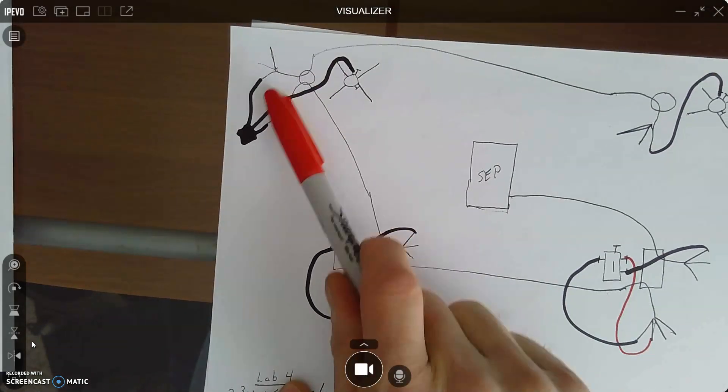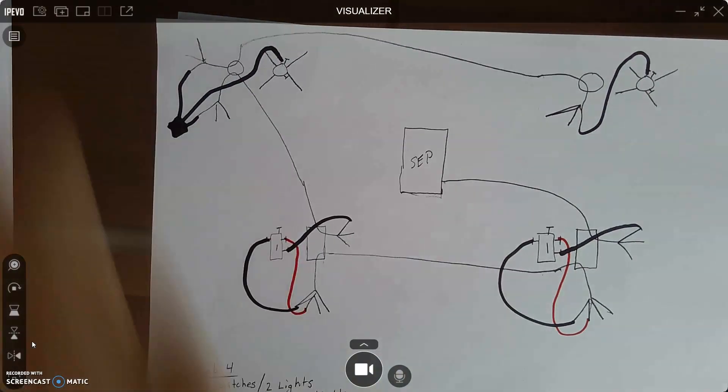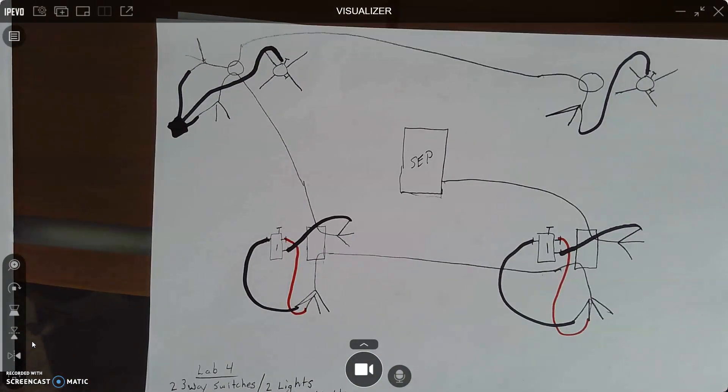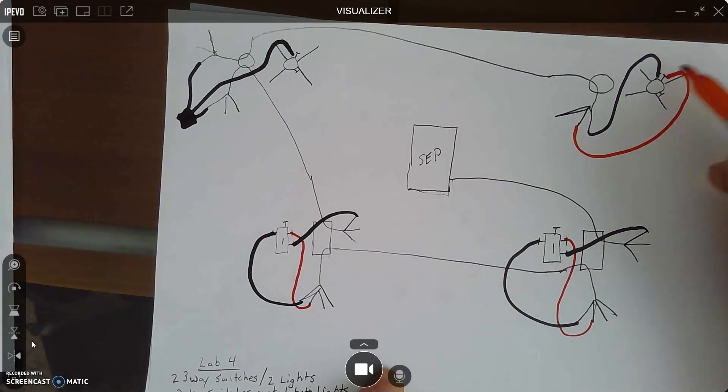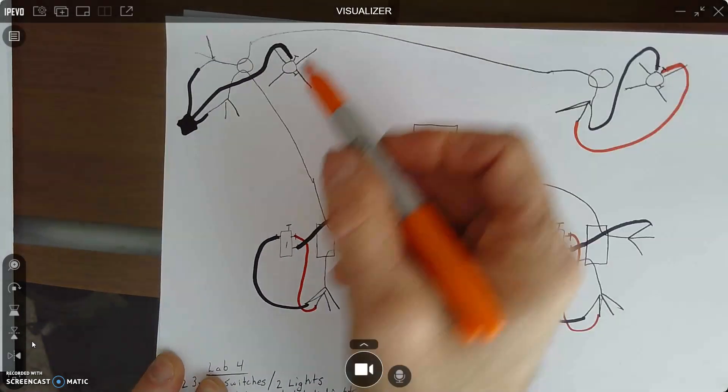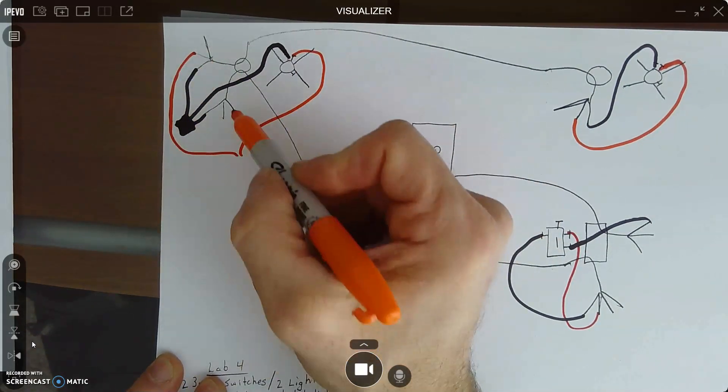Then I went up here and just connected my hot. This should look familiar to you, right? Those two things. So now we have to have return electricity, right? So up here, return electricity is easy, right? Right there. Over here, it's relatively easy as well because we've got to go like this.